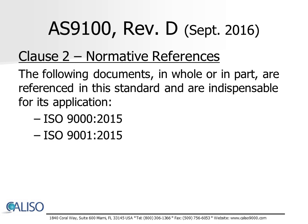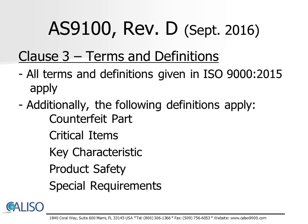Clause 2 lists both ISO 9000:2015 and ISO 9001:2015 as documents that are both referenced in this standard and are indispensable for its application. Clause 3 identifies terms and definitions applicable to this standard.